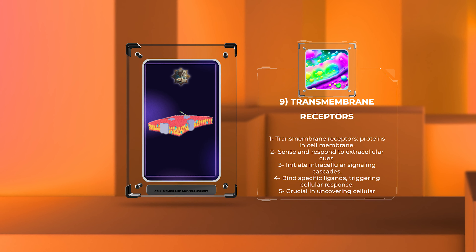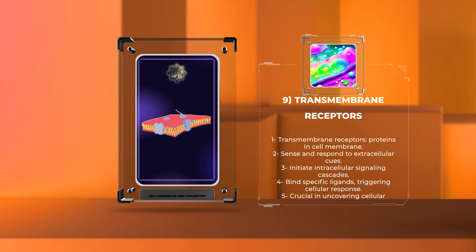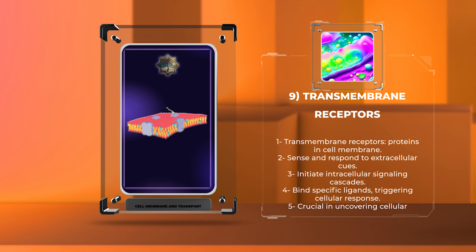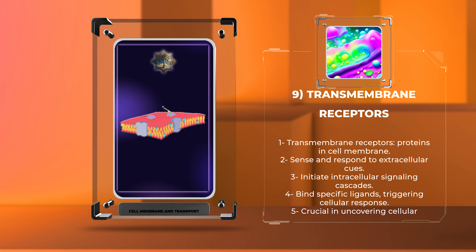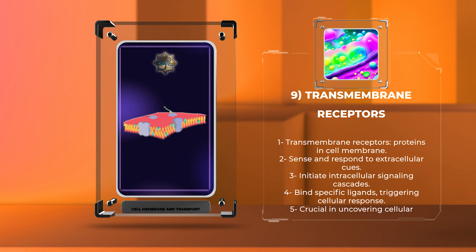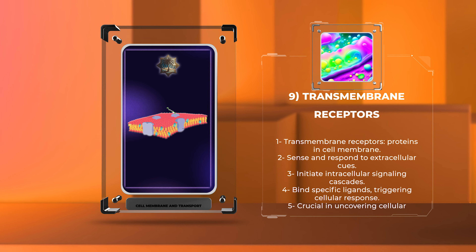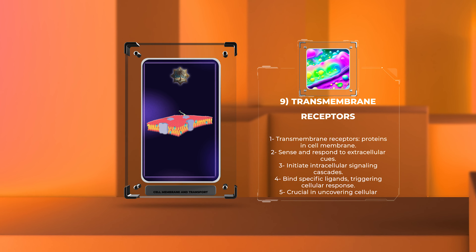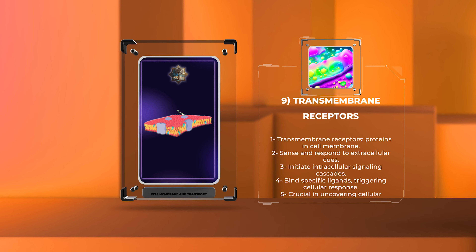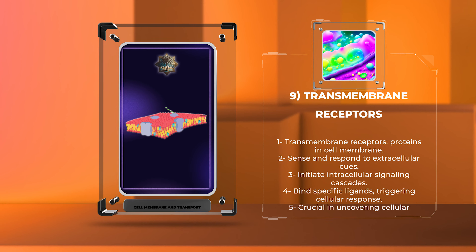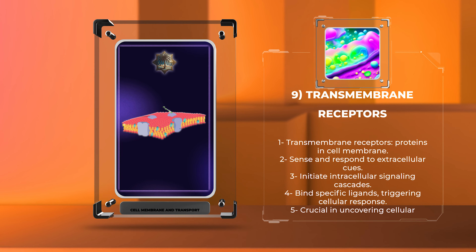Transmembrane receptors are proteins located in the cell membrane that play a vital role in cellular signaling. These receptors are responsible for sensing and responding to various extracellular cues and initiating intracellular signaling cascades. They bind to specific ligands such as hormones or neurotransmitters, triggering a cellular response. Understanding the function and regulation of transmembrane receptors is crucial in uncovering cellular pathways and developing targeted therapies for diseases.